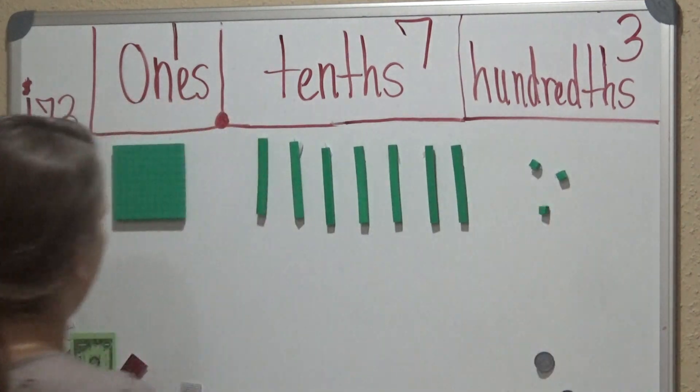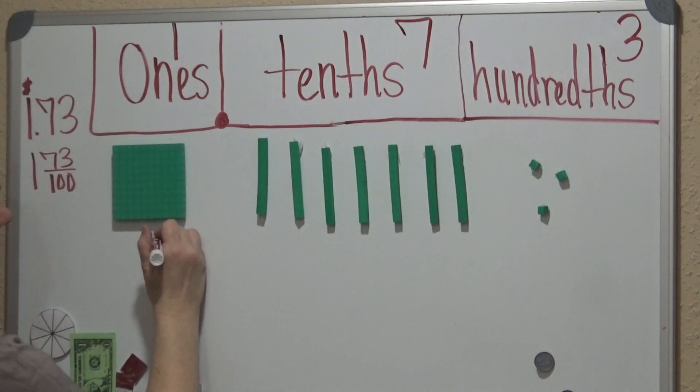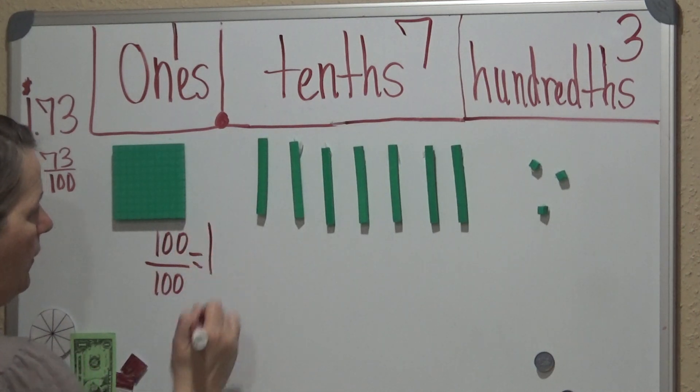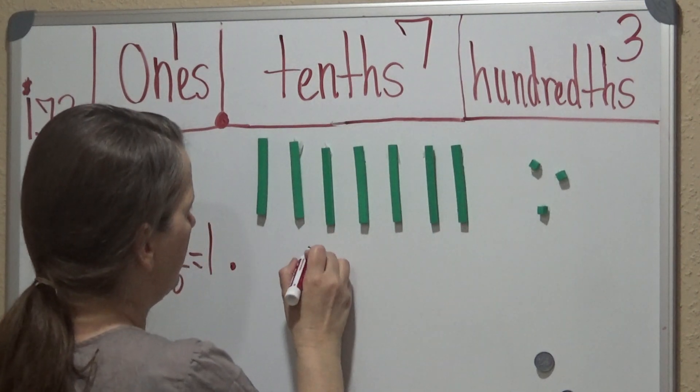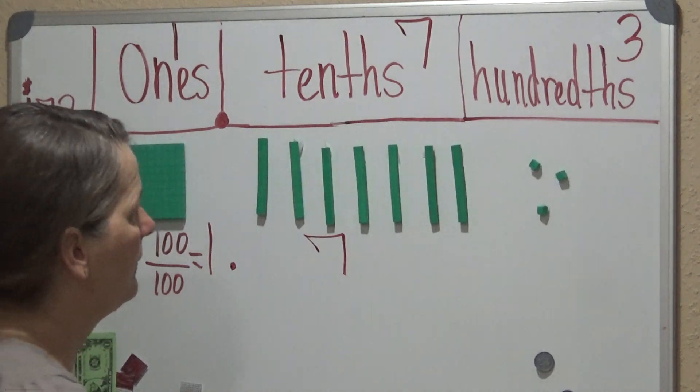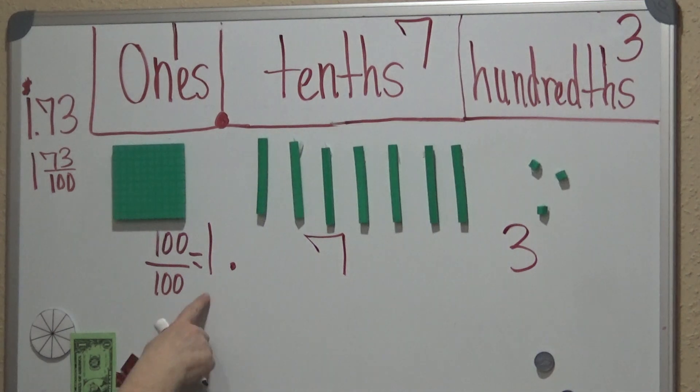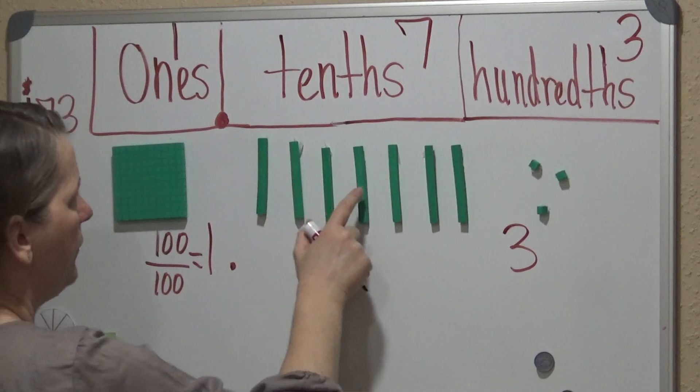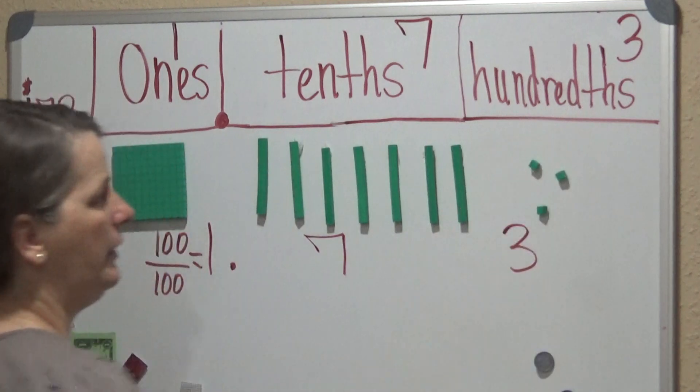This is another way of doing it. 100, which would look like this, we have 100 out of 100, which is equivalent to one whole. Then we have 1, 2, 3, 4, 5, 6, 7 dimes, and then we have 3 pennies. So that's 1 and 73 hundredths: 100, 7 tenths, and 1, 2, 3 units.